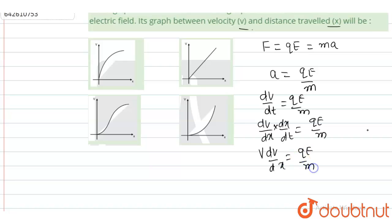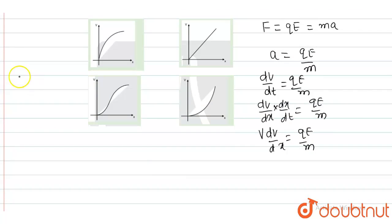Now from here I can write v dv equals qE/m dx, and I will integrate this from 0 to v, and this is 0 to x.